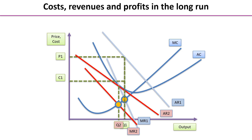If you look at where that vertical line touches the average revenue curve, it's also touching the average cost curve. It's now just tangential to the average cost curve — there's no overlap where average revenue is greater than average cost. So at P2 and C2, both at the same point, the firm is no longer making supernormal profit; it's making just normal profit instead.